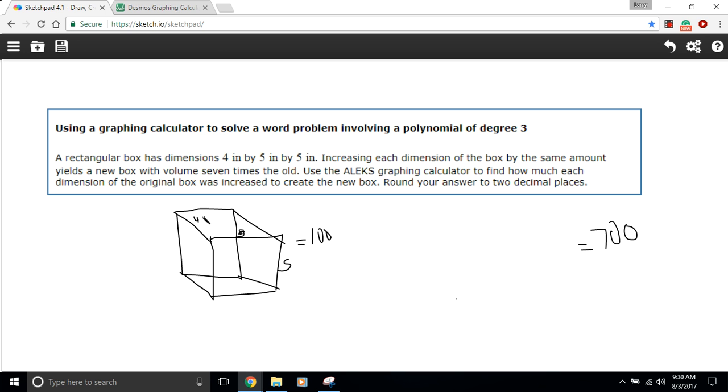We don't know what that number is. That's what we're trying to find. So we can call it x for now. So we want to do plus x to each of these. And how do you find the volume of a box like this? Well, you just multiply each of these together. So we're going to have 4 plus x times 5 plus x times 5 plus x. And that should equal 700.